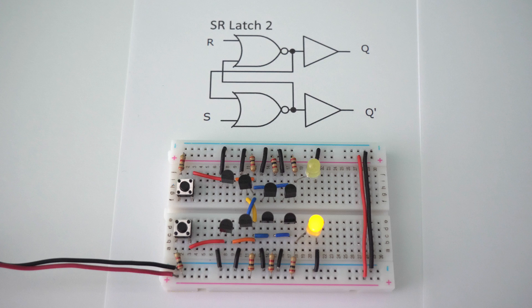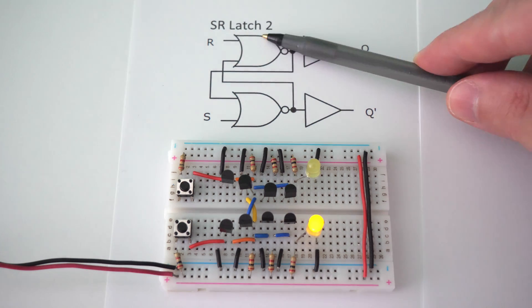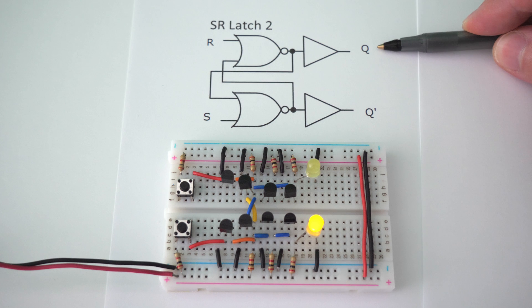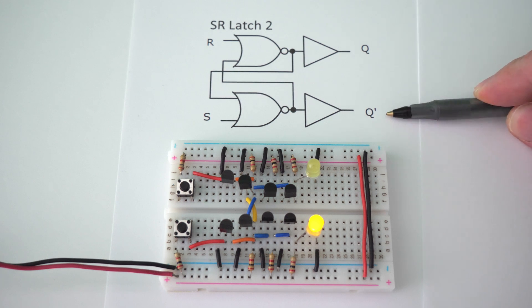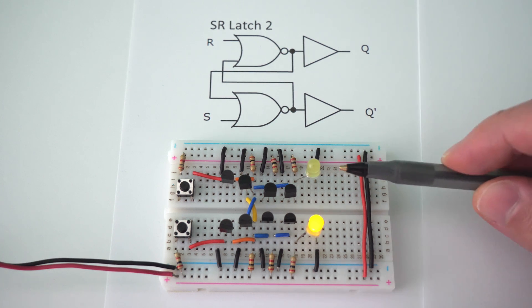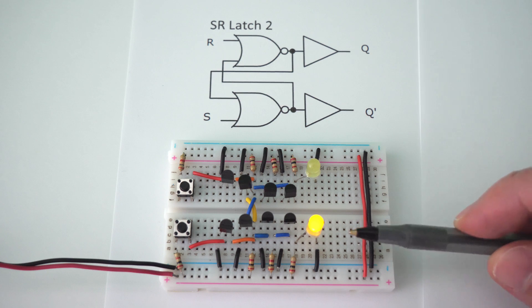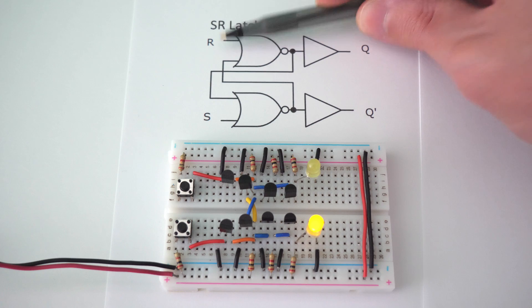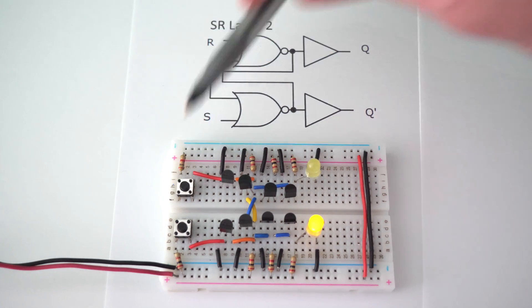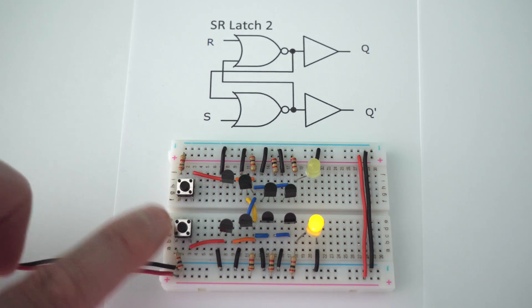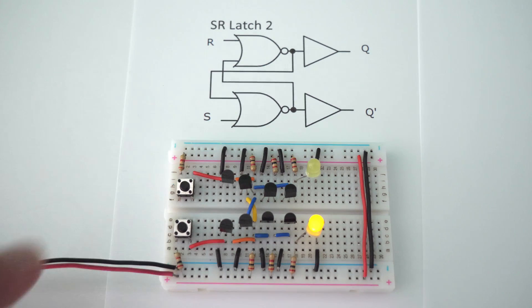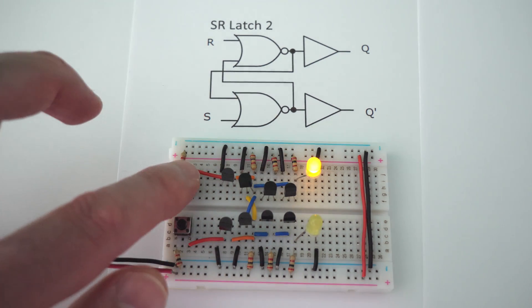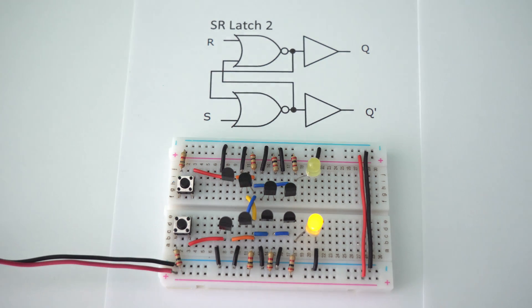Rather than using OR gates, SR latch 2 is built using two NOR gates. Our output is Q and the inverse output is Q inverse — this LED is the output and this is the inverse of the output. We have a set and a reset pin controlled by two push-button switches. If we press set, our output will turn on, and if we press reset, our output will turn off.